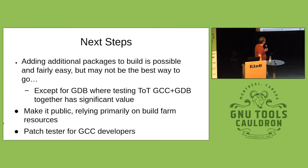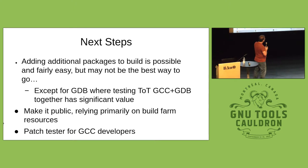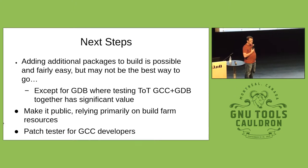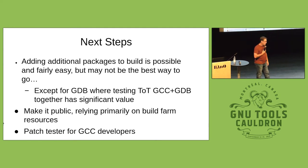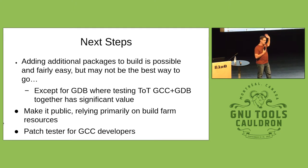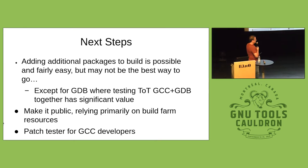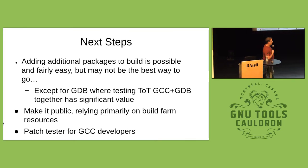What should we be doing with it? We could add more packages to build — I think the only one we really want to add is GDB because of the tight integration between GCC and GDB. What we really need to do is make it public. I want us as a project to have a tester — I am not wed to Jenkins, this is just what I built it in — but we should have a tester that runs on GCC build farm hardware, runs all the time, and constantly churns through all these targets.